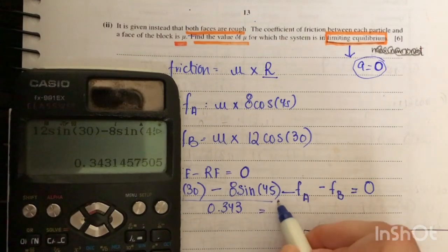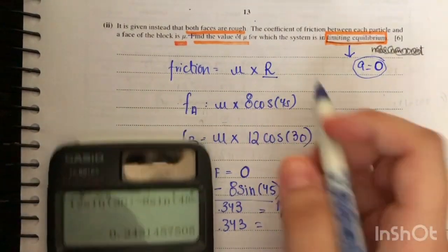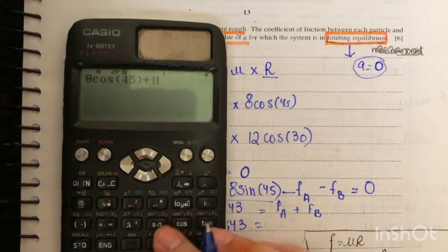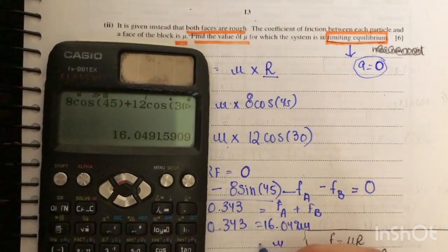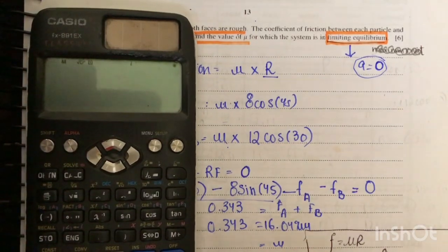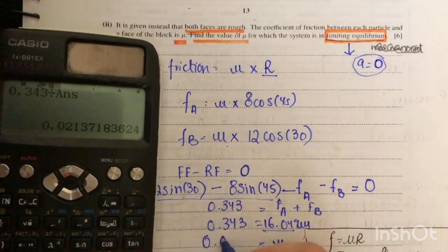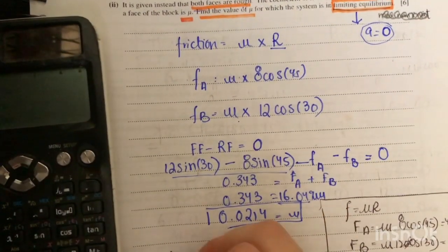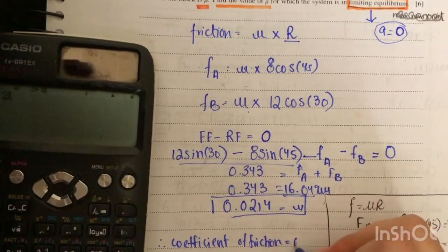Rearranging, 0.343 = friction on A + friction on B = μ(8 cos 45 + 12 cos 30) = μ × 16.049. Therefore μ = 0.343 ÷ 16.049 ≈ 0.0214. Hence the coefficient of friction is 0.0214.